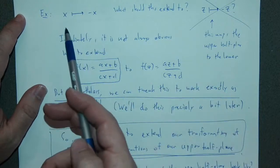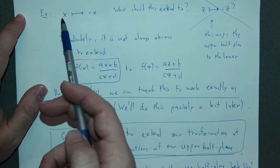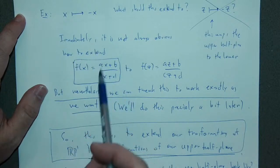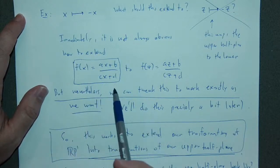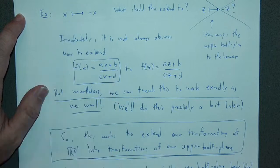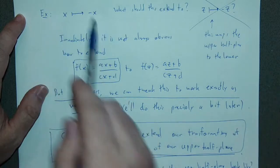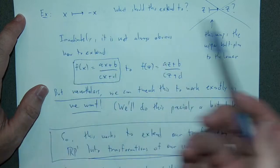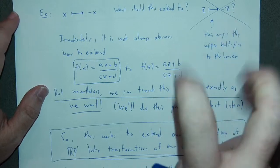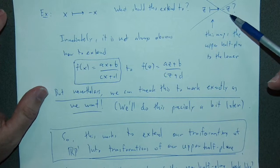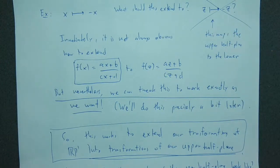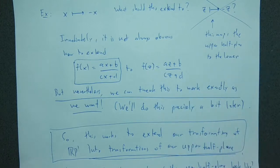For instance, consider the reflection transformation where b and c are 0, d is 1, and a is minus 1. This sends x to minus x — a fractional linear transformation. But the obvious extension, sending z to minus z, maps the upper half plane to the lower half plane. That's a problem because those two half planes are separated by the boundary and points in different halves can never interact. We want the extension to map the upper half plane to itself.